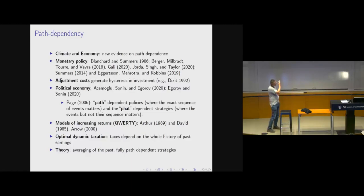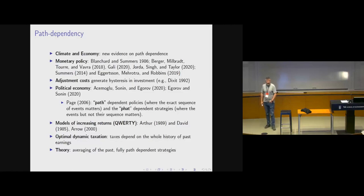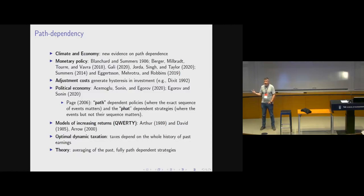There's a very nice survey paper by Scott Page, a political scientist, who distinguishes two types of path dependence. One he calls path dependence, where exactly the sequence of events matters — P-A-T-H matters. The other he calls phat dependence, where just the combination of different things matters, not the sequence.